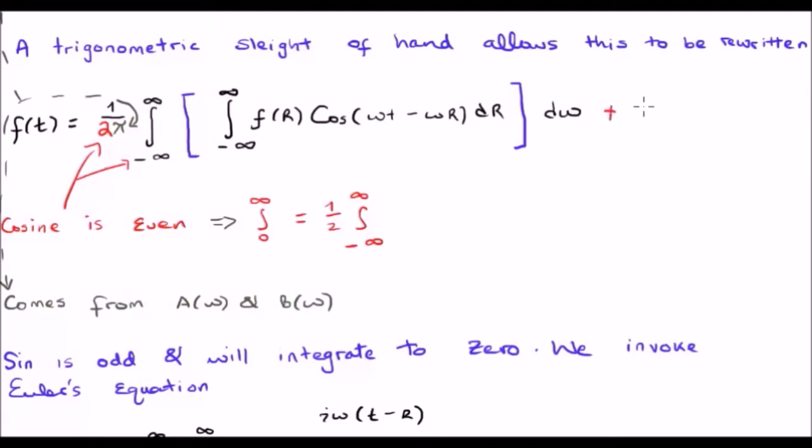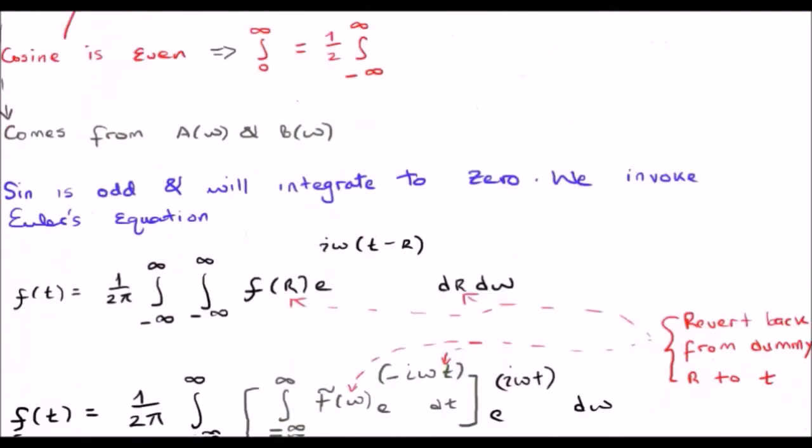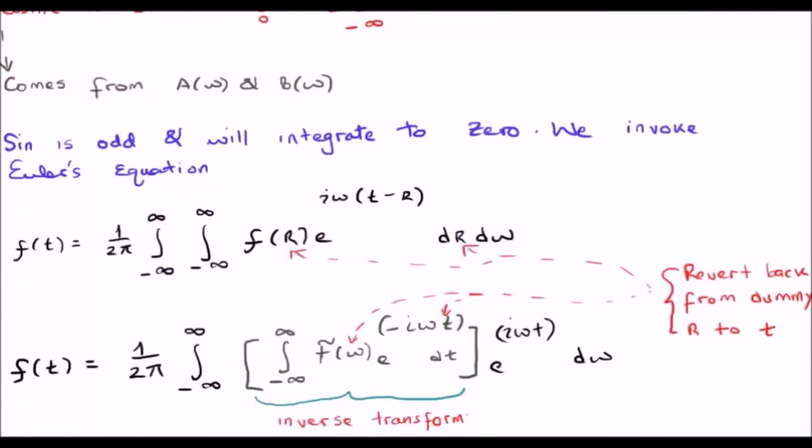So let's do that. If we do that, we can invoke Euler's equation. We have 1/(2π), the double infinite integral. We have f(r) as our dummy variable still there. And now we have e^(iω(t-r)) here.